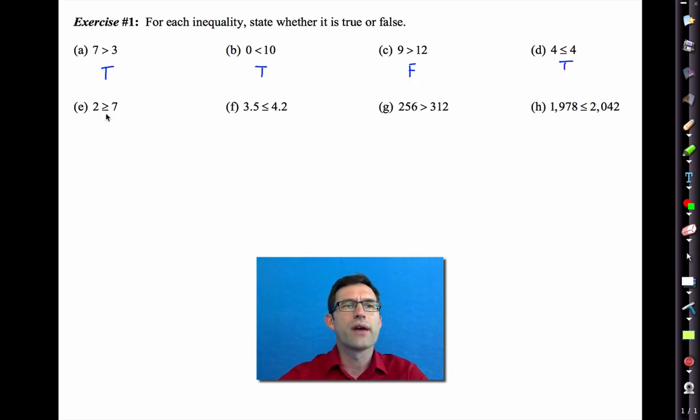2 is greater than or equal to 7. No, it's neither of those things, so that's false. 3.5 is less than or equal to 4.2. Sure it is, because it's less than 4.2, so that's true. 256 is greater than 312. No, it's not. That's false. 1,978 is less than or equal to 2,042. Yeah, that's true, because it's less than.